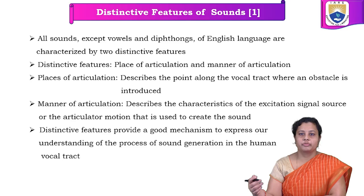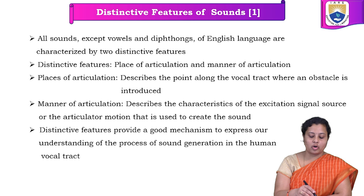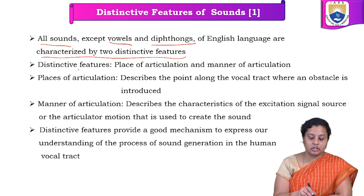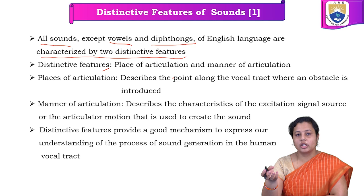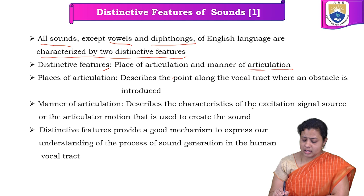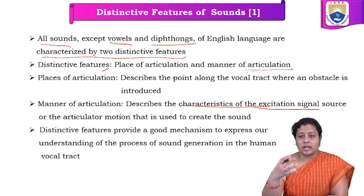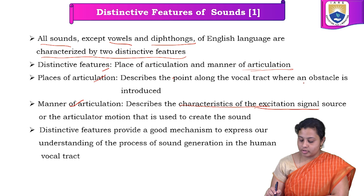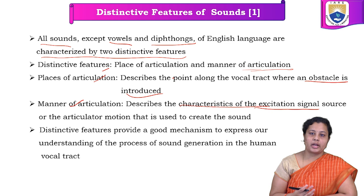In the previous video lecture, we have seen that all sounds — vowels and diphthongs — except these two, all other sounds are categorized by two distinctive features: place of articulation and manner of articulation. Place of articulation describes where the constriction or obstacle is being created, and manner of articulation describes the characteristics of the excitation signal — what it is and where it is being created. Based on these two features, all the sounds have been divided.